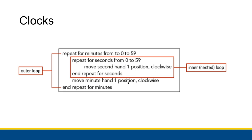All of that is a prerequisite for the minute hand to be moved. Once the second hand goes from zero all the way to 59, when it tries to go from 59 to 60, that's when we know it's time for another movement of the minute hand. For every minute, the second hand moves 60 times. For every iteration of the minute loop, we have 60 iterations of the second loop.